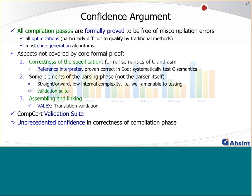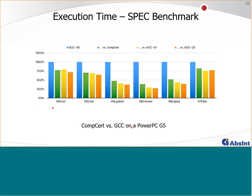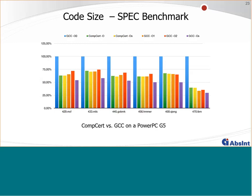Here is the performance data on SPEC benchmarks: blue is GCC -O0, green is CompCert. CompCert is considerably faster than GCC -O0. GCC -O1 and -O2 are also listed; CompCert is roughly comparable to GCC -O2 on average. Regarding code size, CompCert in green tends to generate smaller code than GCC at most optimization levels, and is comparable to GCC with size optimizations.